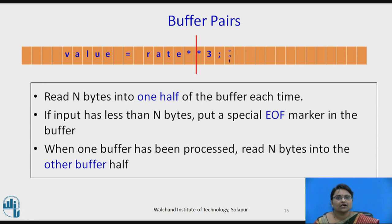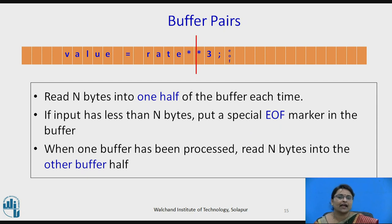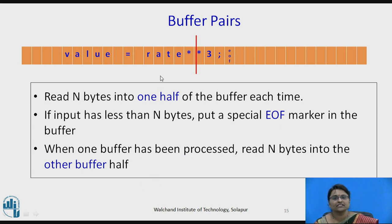The buffer pair reads n bytes into one half of the buffer at a time. If the input has fewer than n bytes, an end-of-file marker is stored at the end of the input statement to inform the compiler that the statement has ended. When one buffer half has been processed, n bytes are read into the other half — meaning one half is being processed while the other is being loaded, which is why two buffers are used.